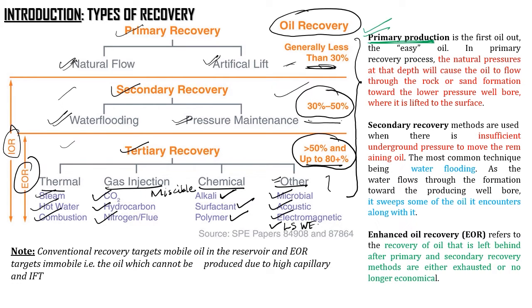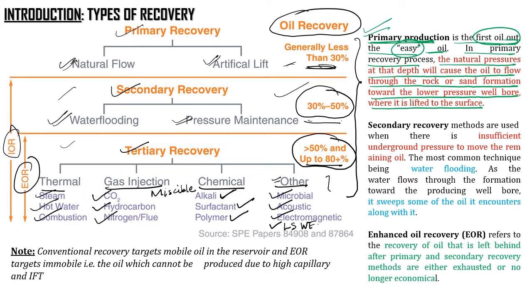Primary production is the first oil out — the easy oil present in the reservoir. In the primary recovery process, natural pressures at depth cause oil to flow through the rock or sand formation toward the lower pressure wellbore where it is lifted to the surface. That means the natural reservoir energy already present helps obtain oil to the surface. When the well ceases to flow, we can go for artificial lift, which creates a low flowing bottomhole pressure, creating higher drawdown and getting more oil.